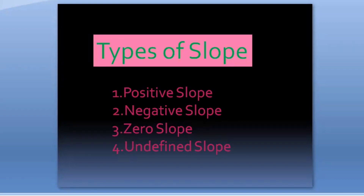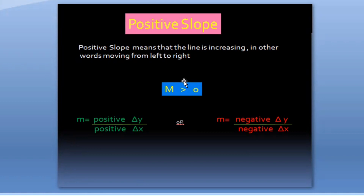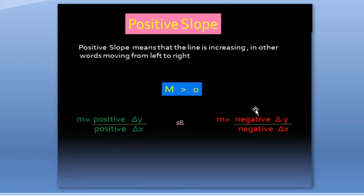Let's have a look at the positive slope. What is positive slope? Positive slope means that the line is increasing — in other words, moving from left to right. When our slope is positive, our slope value is greater than zero. If the change in y value and change in x value are both positive, we get a positive slope. And if both the change in y value and change in x value are negative, we also get a positive slope.